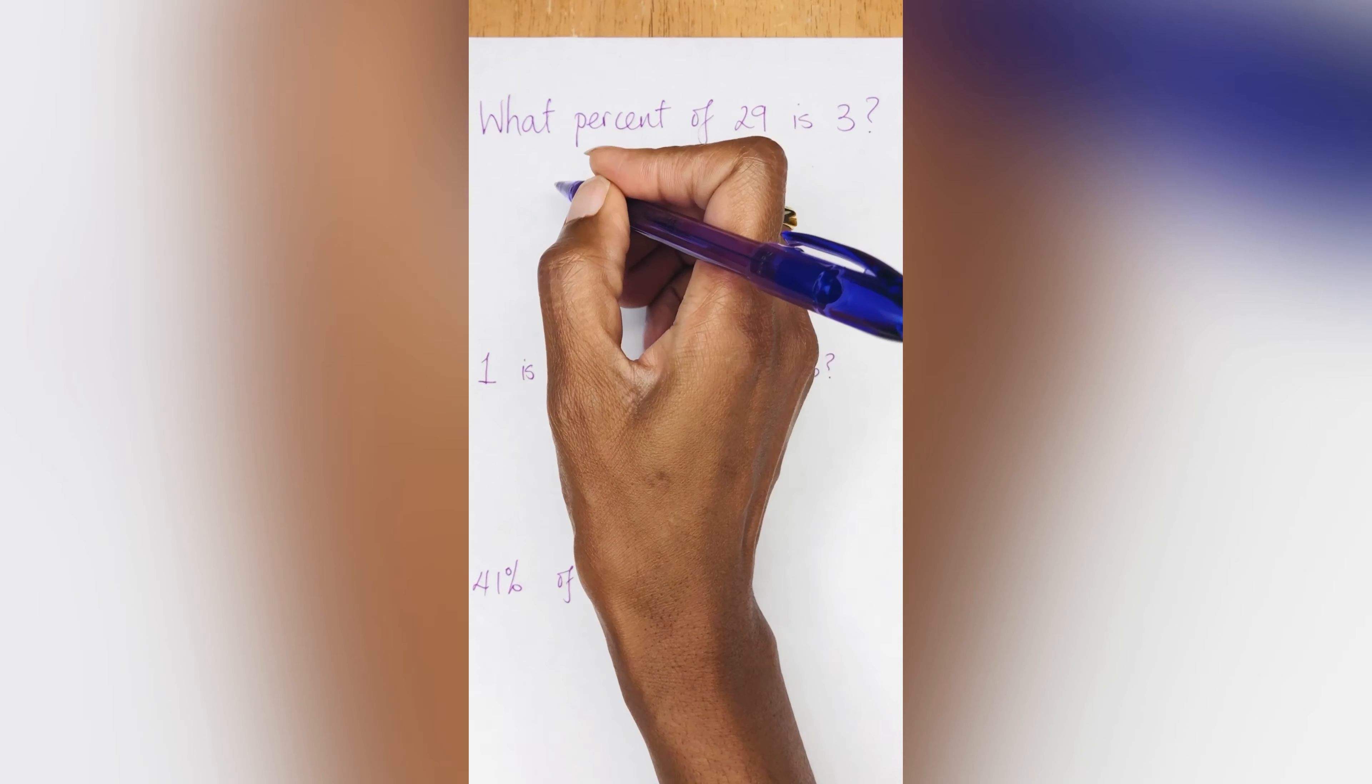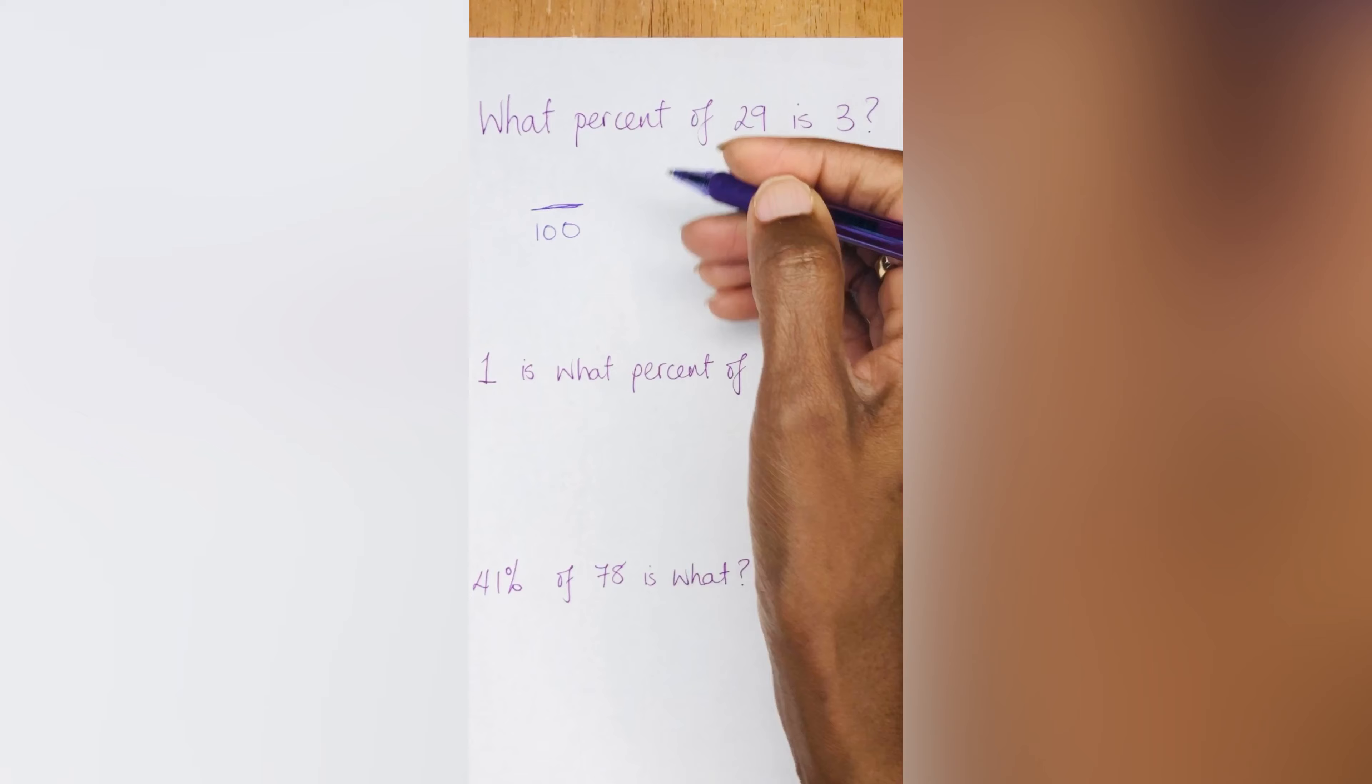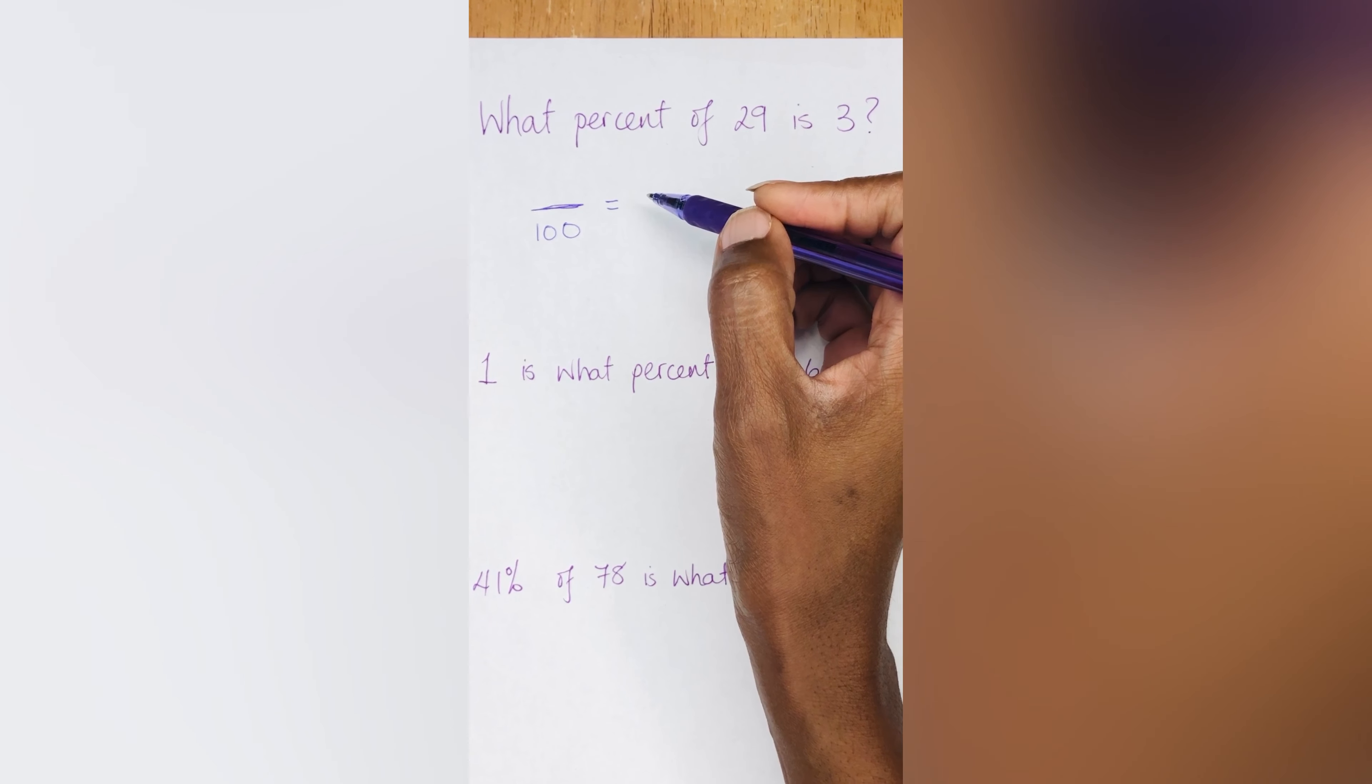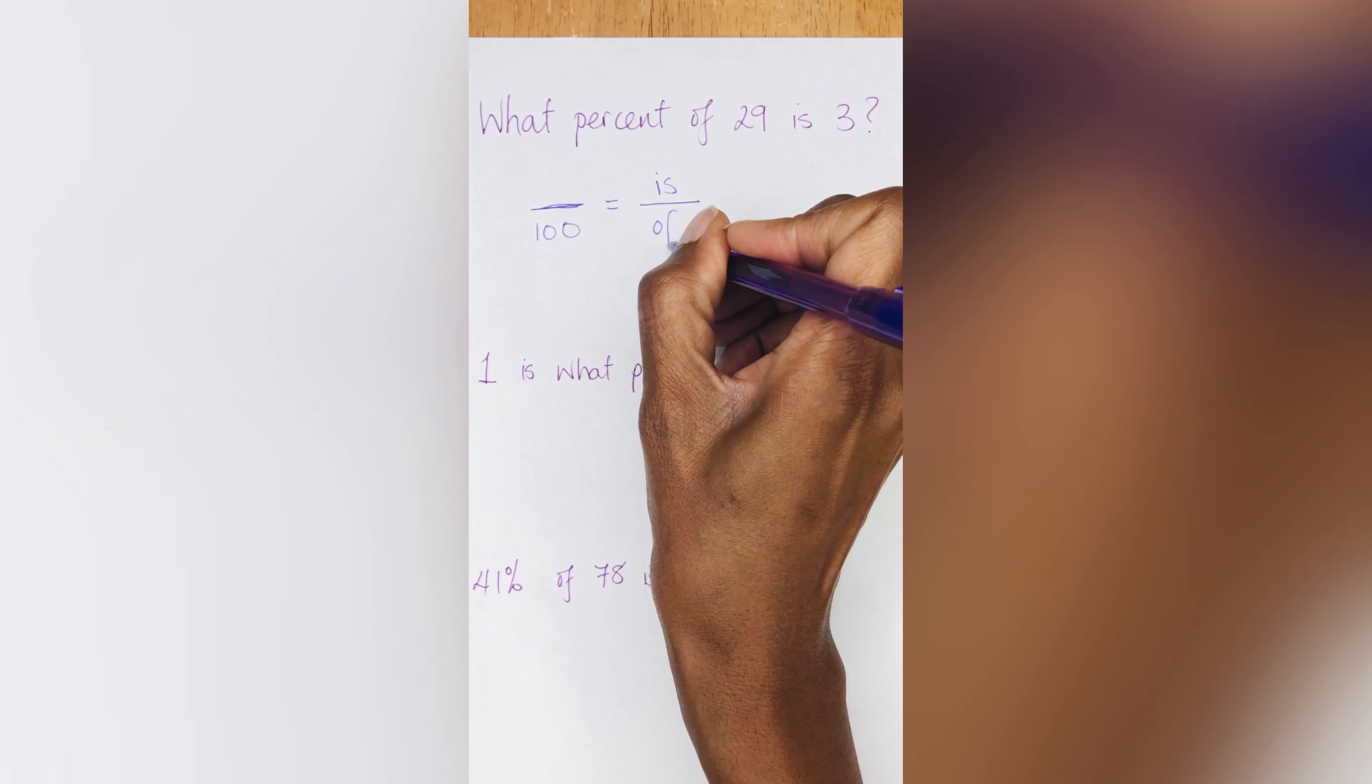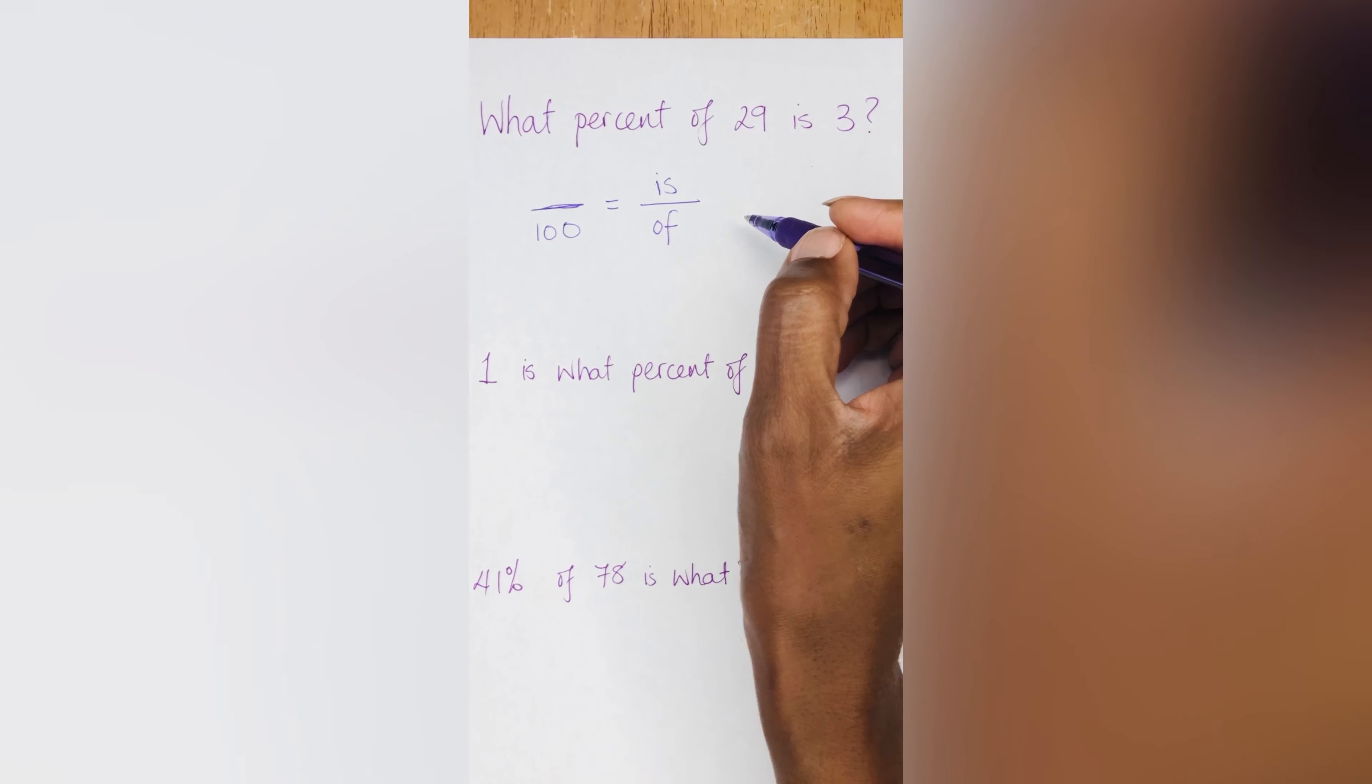So usually you would have a percentage here because percentage is always over 100 or out of 100. So that's always going to be here. Now, sometimes it's a little confusing as to where to put what number. So if we use this formula and we say wherever it says 'is' that number goes there and wherever it says 'of' that number goes in the denominator position. So you have 'is' in the numerator position and 'of' in the denominator position.